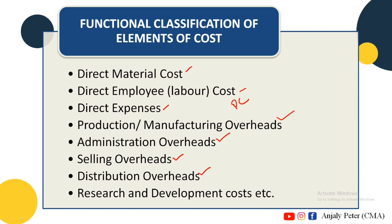Distribution Overhead is called the Distribution Process — that is our finished product moving from the factory through stores and distribution channels. Next is Research and Development Cost, which covers existing product quality improvement. We use all these elements in Functional Classification.